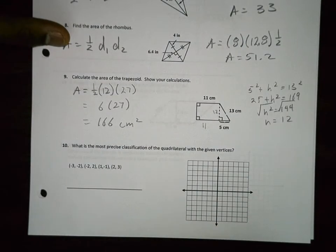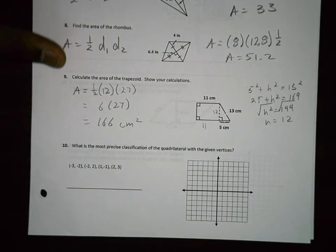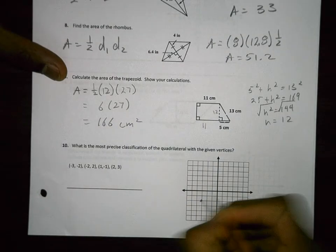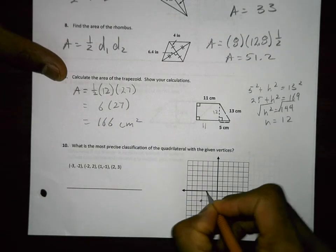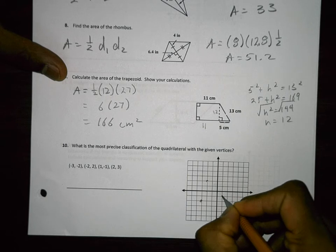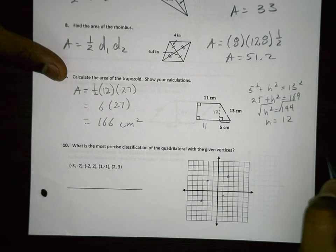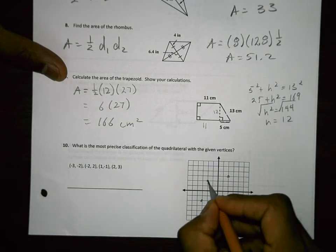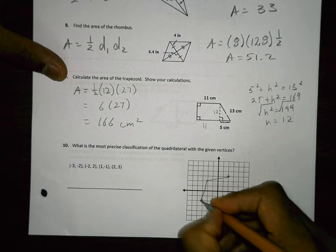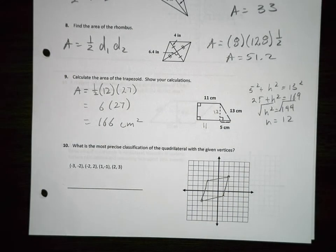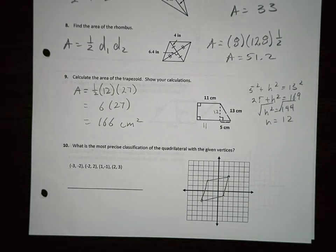Number 10. What is the most precise classification of the quadrilateral? So let's label it. (-3,-2), (-2,2), (1,-1), and (2,3). Here's my quadrilateral. So we're trying to determine what it is: kite, rhombus, or square. So the first thing I want to do is look at the slopes and see if it's a parallelogram.